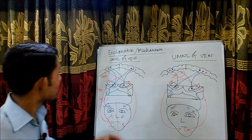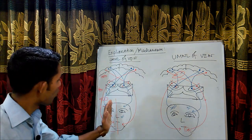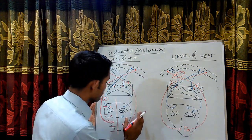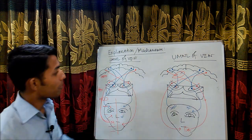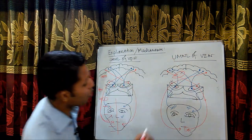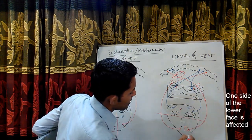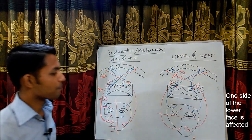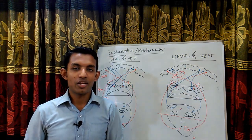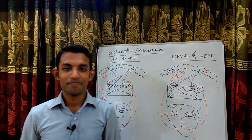So we can see that in lower motor neuron type of facial nerve paralysis, one whole side of the face is affected and the other side is intact. But in upper motor neuron type, the whole upper part of the face is intact and only the lower part is affected. This is the mechanism of facial nerve paralysis. Hope you liked this video — thank you for watching.